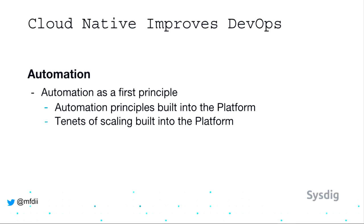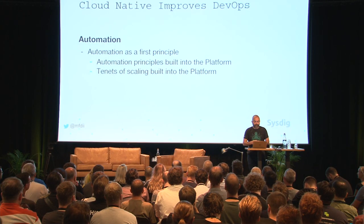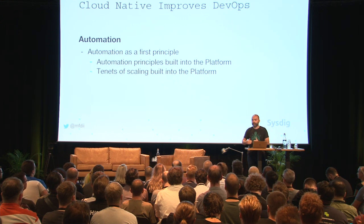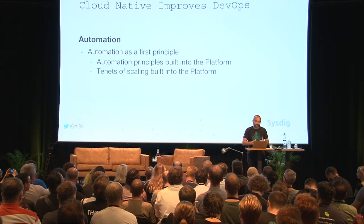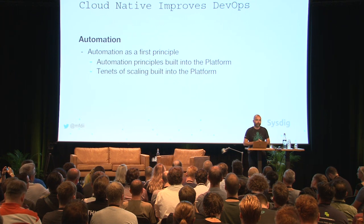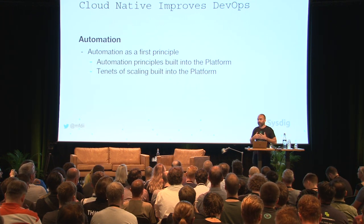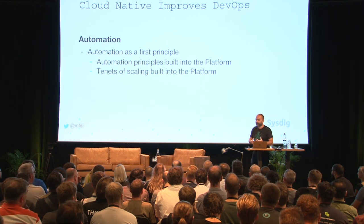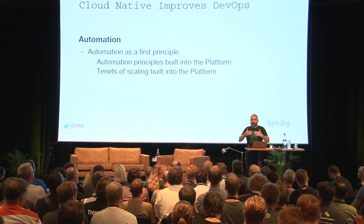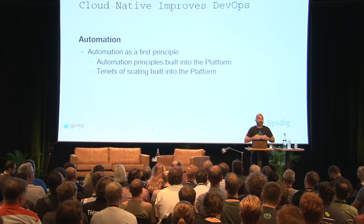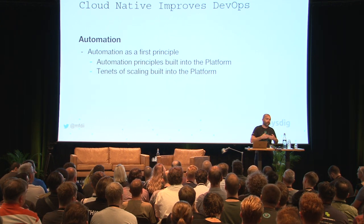Cloud native improves DevOps — that's how I'd define the relationship. One important aspect is that automation is a first principle of cloud native. Automation principles are built into the platform. You may not feel them the way you used to when writing an Ansible playbook or a Puppet manifest, because they're abstracted behind the scenes. But there's a lot of automation taking place in platforms like Cloud Foundry and Kubernetes that you don't see.